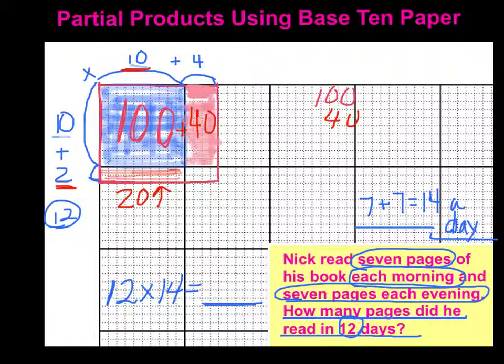And lastly, I'm going to take care of my 2 again. But this time with the 4. So 2 times 4 is going to fill in that last little square right here. So 2 rows of 4 is obviously 8. 8 goes right there.